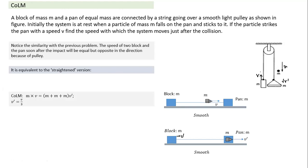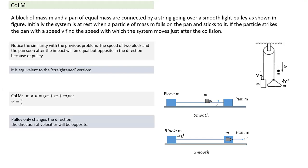We apply conservation of momentum. The initial momentum was in mass m; now mass has become three times, so velocity becomes one third. When mass becomes three times, kinetic energy also becomes one third, and the loss in kinetic energy equals two thirds of the initial kinetic energy. The pulley has only changed the direction.